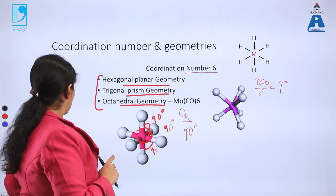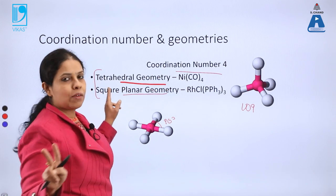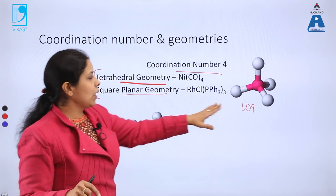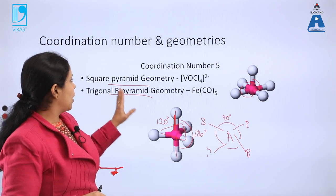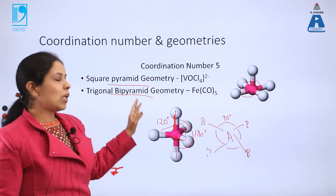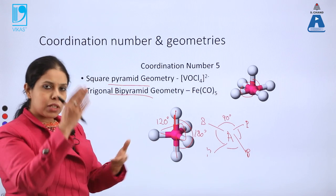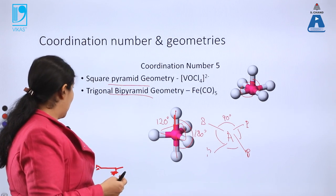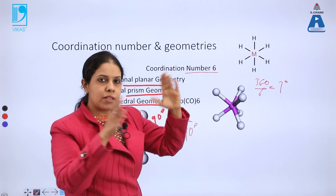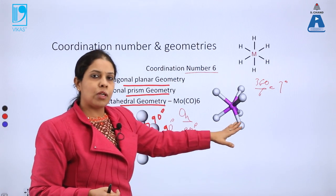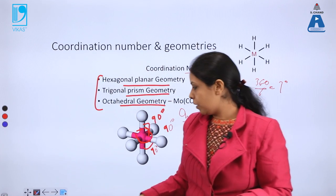To summarize: coordination numbers 4, 5, and 6 are the most common. For coordination number 4, two geometries are possible — tetrahedral and square planar (90 degree angle). For coordination number 5, square pyramid and trigonal bipyramid (pyramid: one molecule out of the plane; bipyramid: two in opposite directions). For coordination number 6, three types of geometries are possible: hexagonal planar (all six bonds in one plane), trigonal prism, and octahedral (very symmetrical, all bond angles 90 degrees).